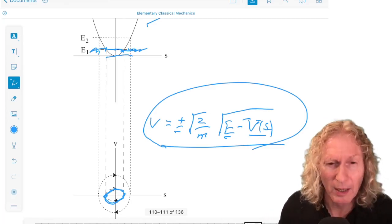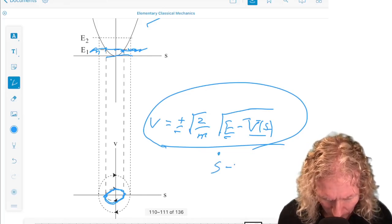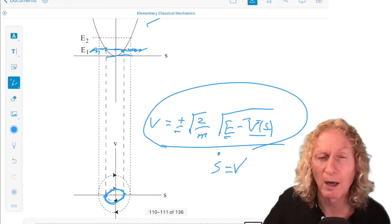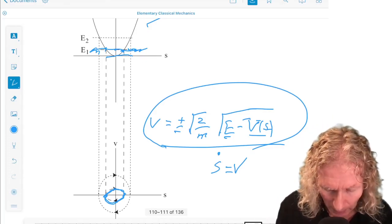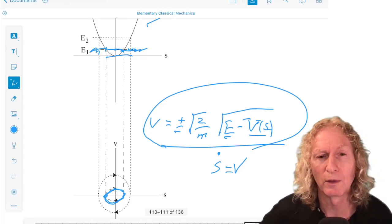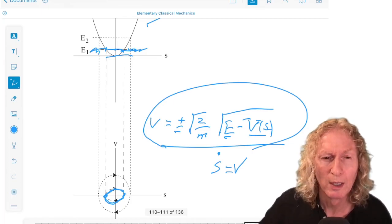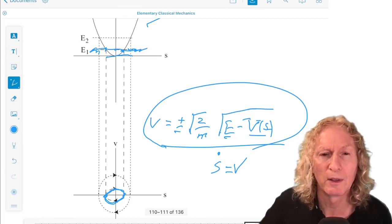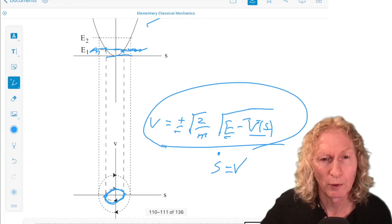Now what about the arrows? Well, remember that s dot equals v. So for v positive, s is increasing. Trajectory is moving from left to right. For v negative, s is decreasing. s dot negative. Trajectory moving from right to left. So the trajectory circulates in this clockwise fashion. And I've drawn the arrows accordingly.